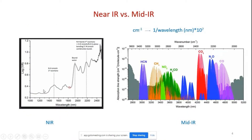Comparing the bands: on the mid IR side you see different molecules with R and P branches of vibration-rotation spectra — pretty strong and narrow. In the near IR region, you see broad combination bands and overtones that are quite messy and wider. In order to make sense of near IR data, you need to use statistical techniques and chemometrics. You can't just easily analyze it the way you can in mid IR.